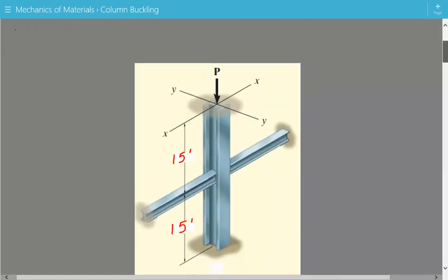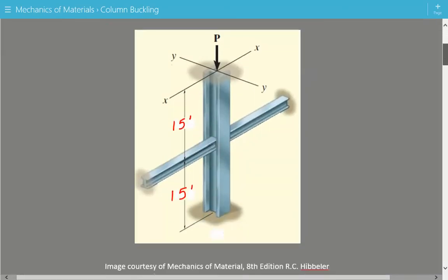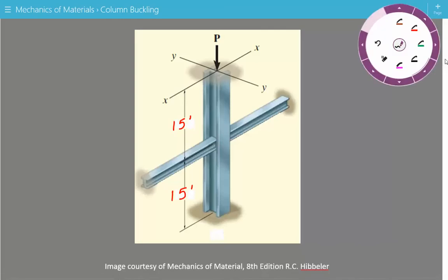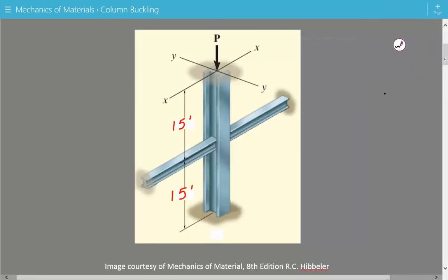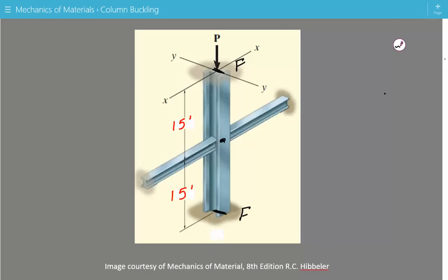Here is our W6x15 steel column with a length of 30 feet. The unbraced length about the X axis is 15 feet plus 15 feet, so that's 30 feet. The unbraced length about the Y axis is equal to 15 feet. The boundary condition at the bottom is fixed, same at the top — it's fixed — and the bracing at mid-height is considered to be pinned.